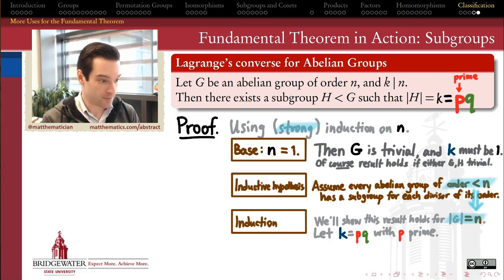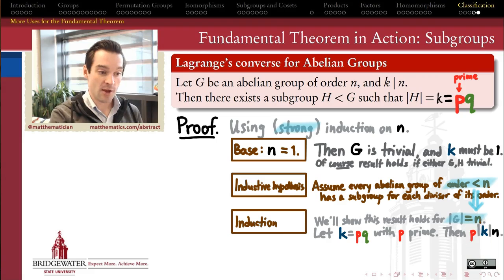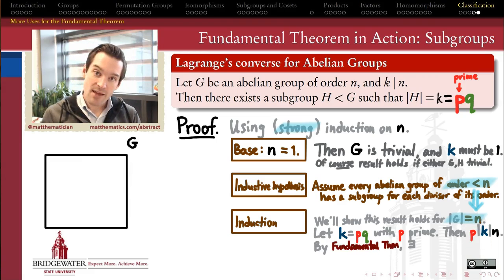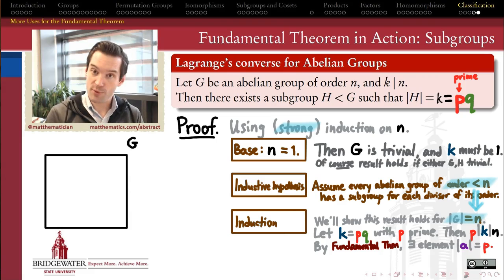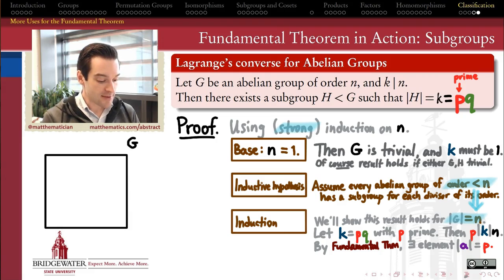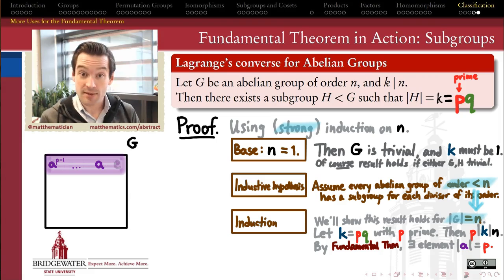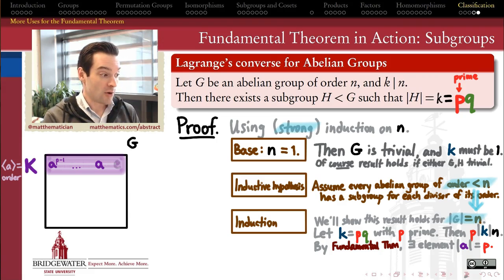If k equals p times q where p is prime, then p divides k, and since k divides n by assumption, p also divides n — that's going to be important. Now we hit this with the fundamental theorem of finite abelian groups — or equivalently Cauchy's theorem — which tells us there is definitely a subgroup of G of order p, since p is a prime divisor of n. Specifically, there exists an element a of order p inside G, and the cyclic subgroup it generates has order p.